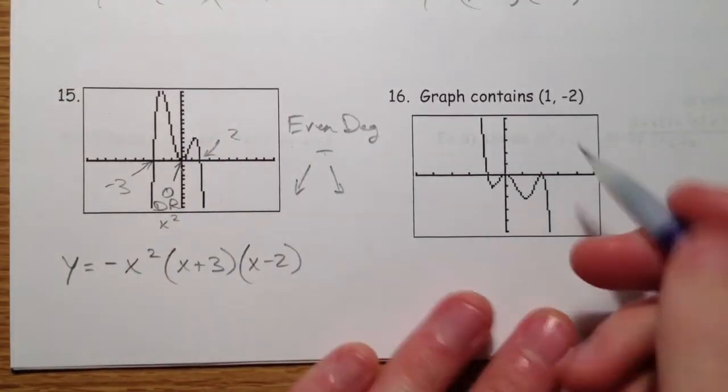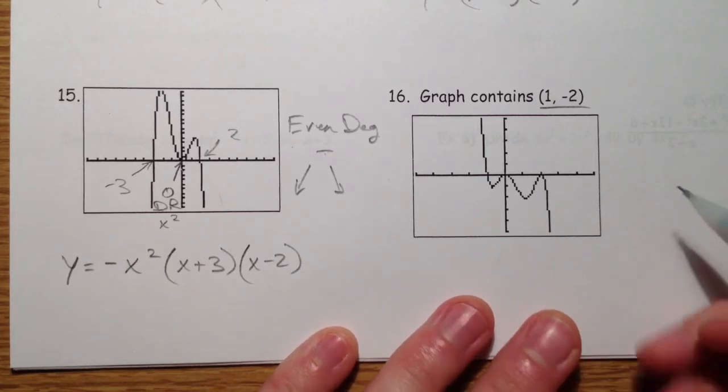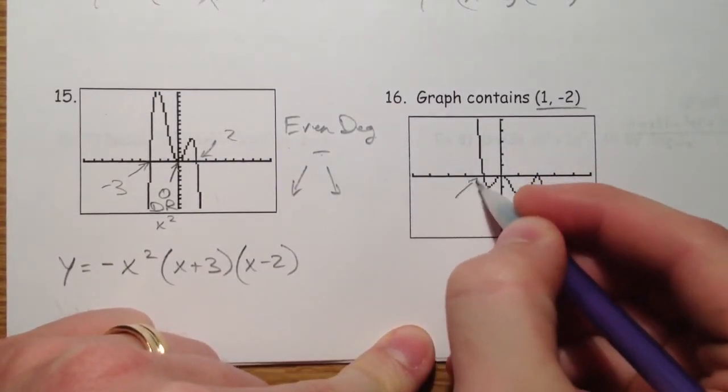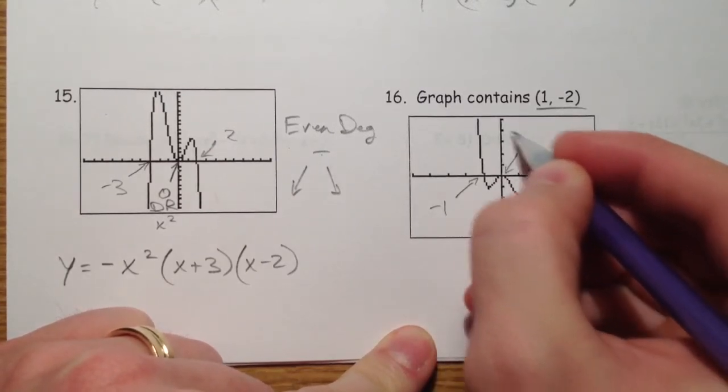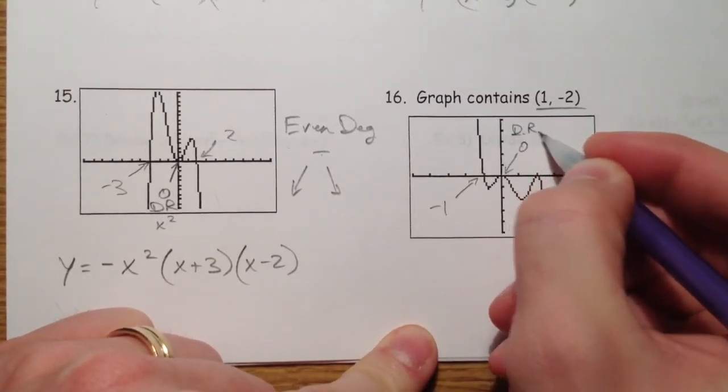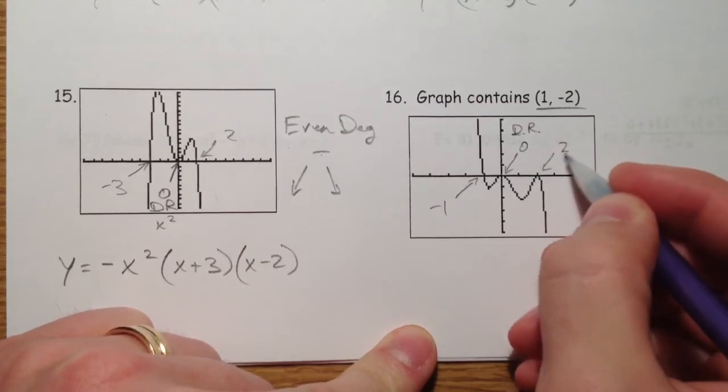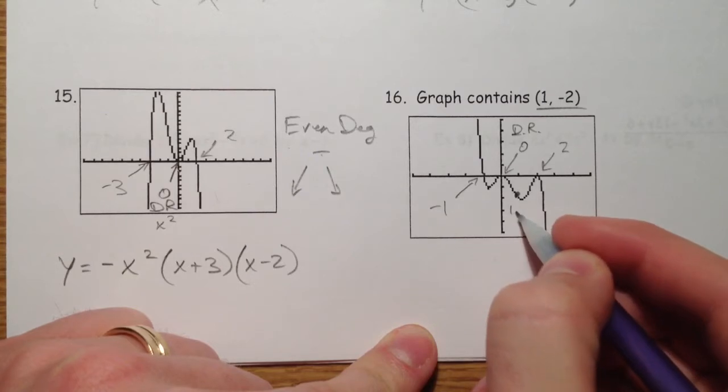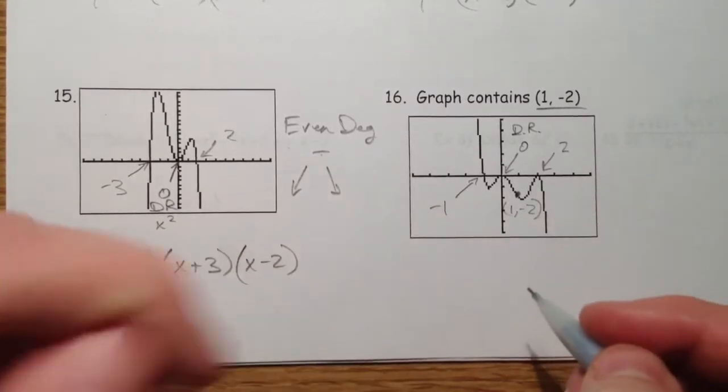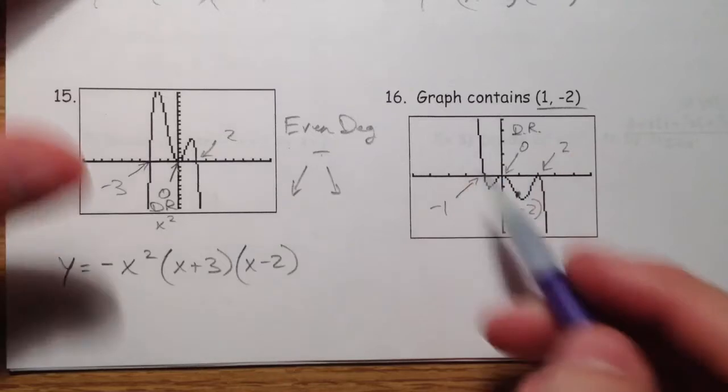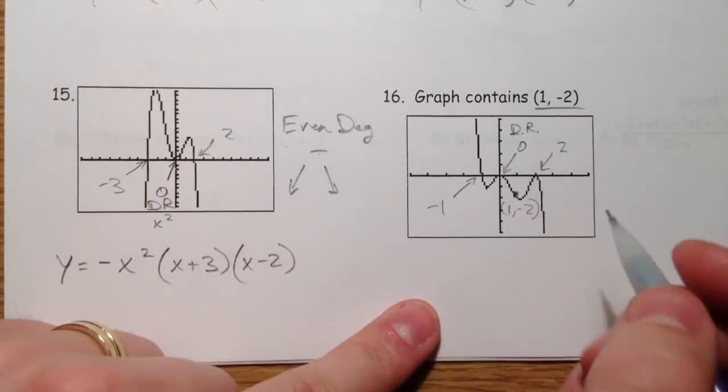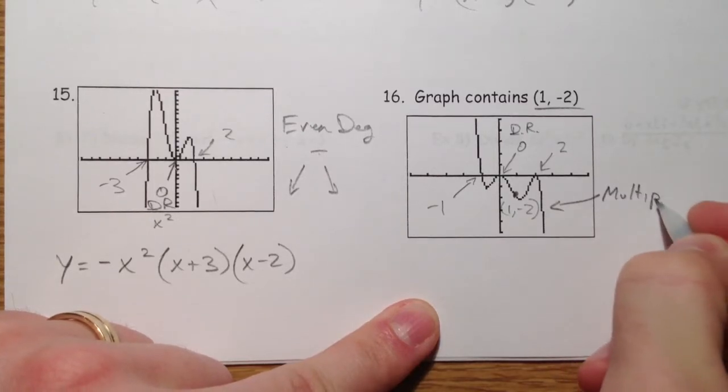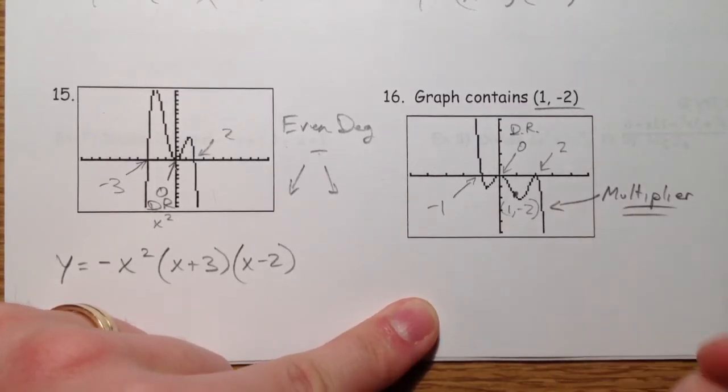And finally, this one contains a point, 1, negative 2. And so we're going to tag that in there. This is negative 1. This is 0. That's a double root. And this is 2. The point 1, negative 2 is in here. So what that's going to add is that it's going to give us a multiplier out front to make sure it goes through that point specifically.